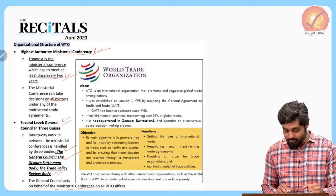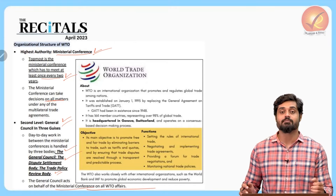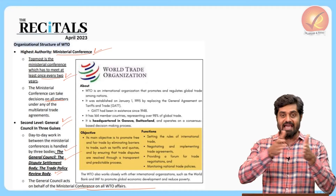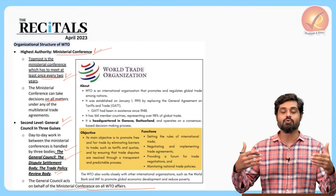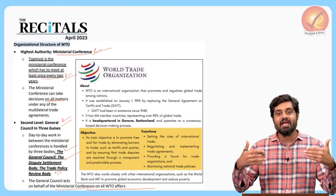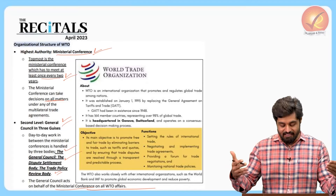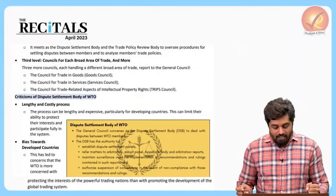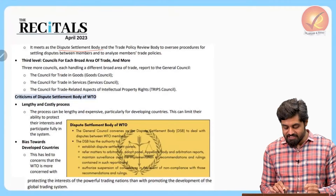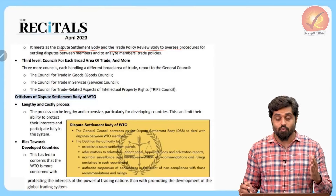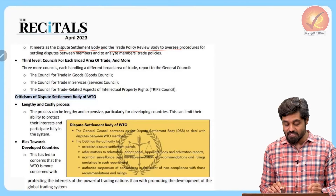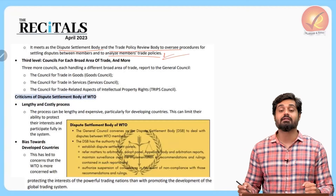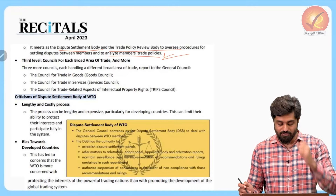The General Council acts on behalf of the Ministerial Conference on all WTO affairs. Between two Ministerial Conferences there is a gap during which a lot of WTO work must be done, so the General Council meets as the Dispute Settlement Body and Trade Policy Review Body to oversee whether dispute settlement procedures are followed and whether trade policies are aligned with WTO norms.